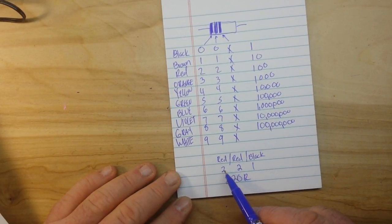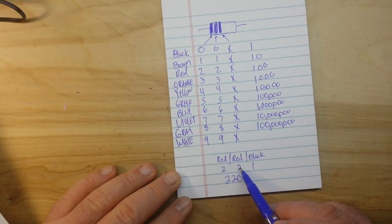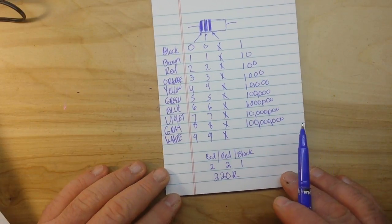So the first stripe is your first digit, the second stripe is your second digit, the third stripe is the number of zeros. Two, two, and one zero: two hundred and twenty ohms.